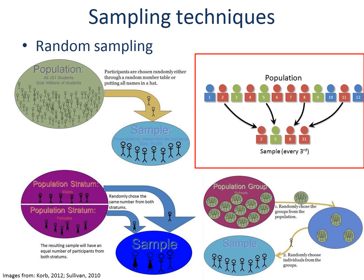The second type of random sampling is systematic sampling. You first create a list of people in your population and choose every kth individual. Like this picture, you can select the second person first from the beginning of the list, then after that select every third person from the previous selection.